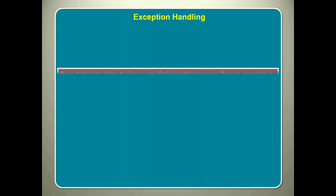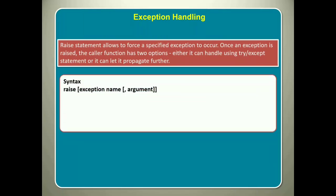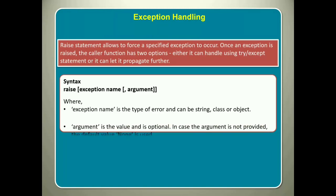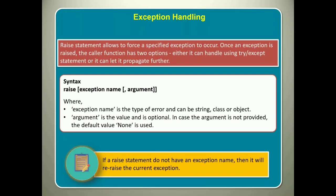First is raise statement. Raise statement allows you to force a specified exception to occur. Once an exception is raised, the caller function has two options. Either it can handle using try or accept statement or it can let it propagate further. Syntax of raise is as shown on the screen. Where exception name is the type of error and can be string, class or object. Argument is the value and is optional. In case the argument is not provided, the default value none is used. Remember that if a raise statement do not have an exception name, then it will re-raise the current exception.